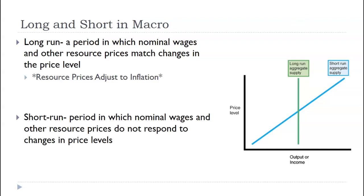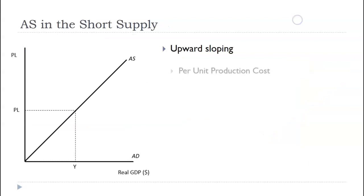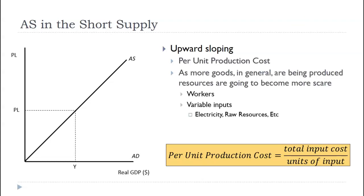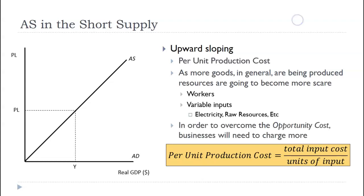Short-run is a period in which nominal wages and other resource prices do not adjust, and so it's going to be upward sloping. Why is it upward sloping? It comes down to per-unit cost, because price level is not just a change in price but the overall changes in prices. Per-unit production costs are total input costs divided by unit costs — essentially average costs from microeconomics. As more goods are being produced, resources become more scarce. We've already hired the workers, we've already used the raw resources. In order to overcome the opportunity cost of doing business, they need to charge more, and this happens across several industries. The aggregate, all-encompassing supply has changed for the economy since it's upward sloping — it's still dealing with opportunity cost.